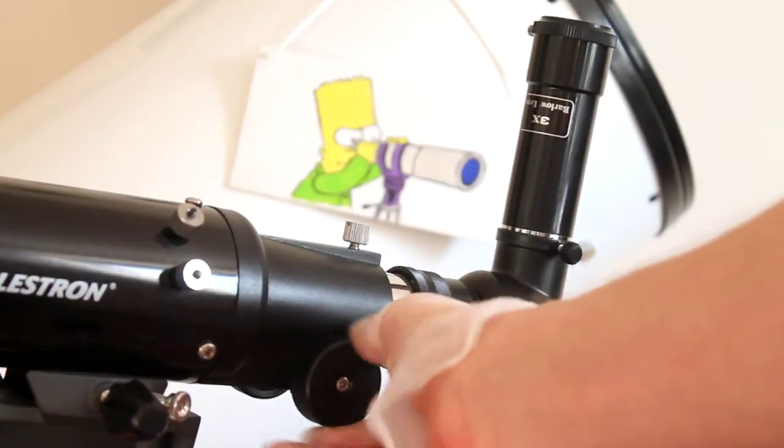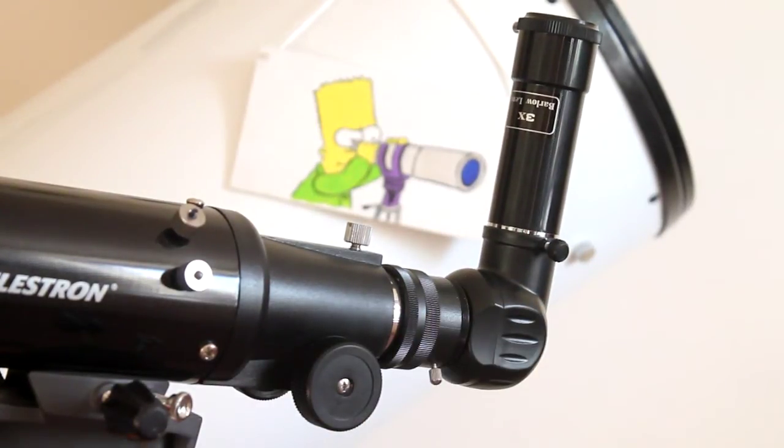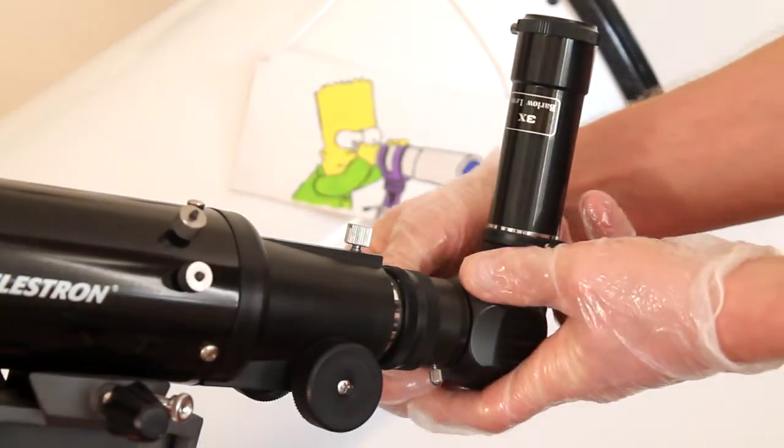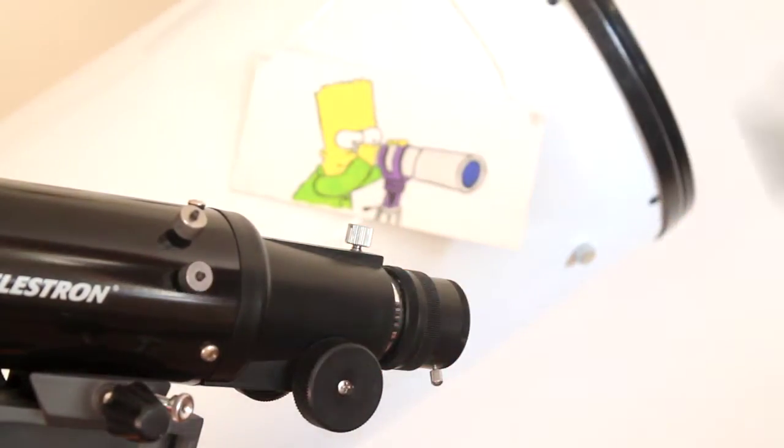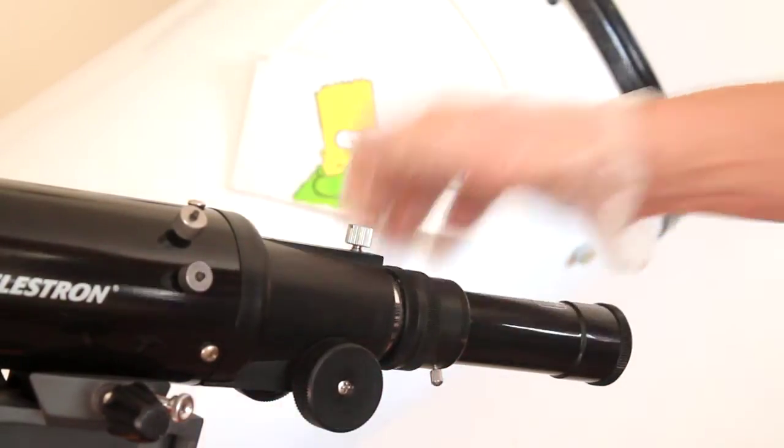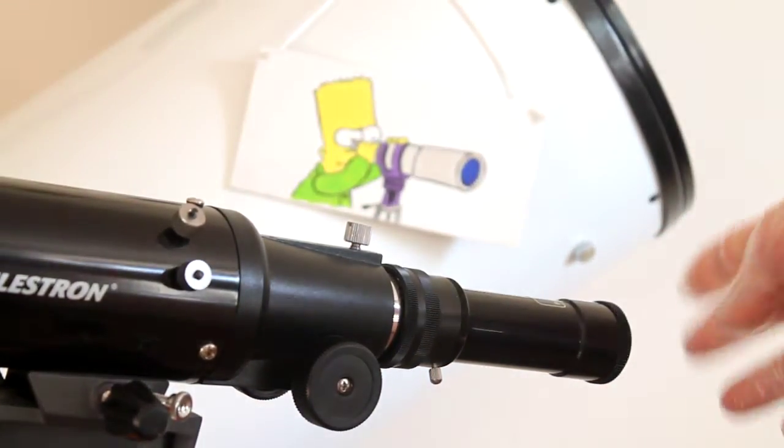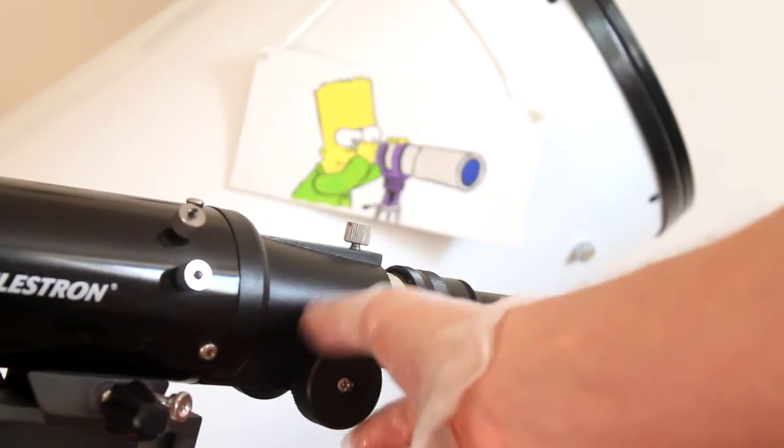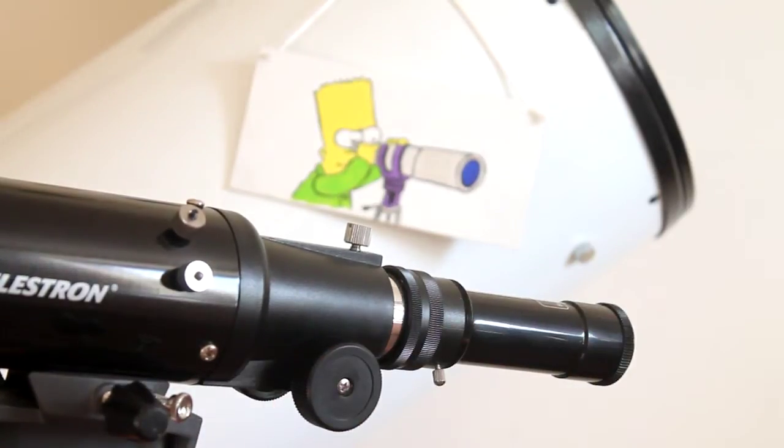I think I mentioned it in one of my videos - you can remove the diagonal and then put the Barlow lens in direct. Now you'll find when you put the eyepiece in, you can focus, but the image is upside down and back to front. This may not be such an issue for prime focus photography, but it may be if you're using it for visual use.